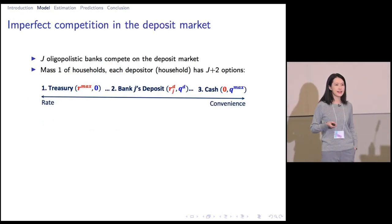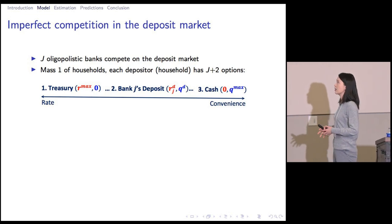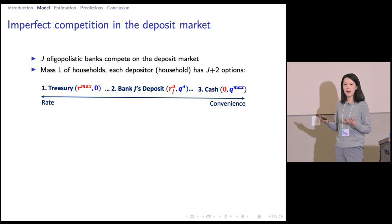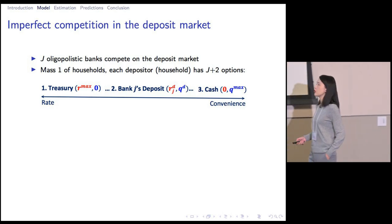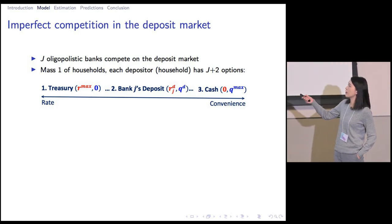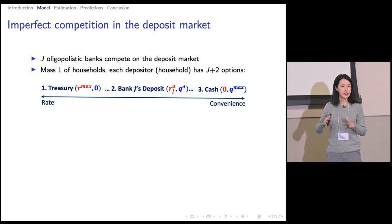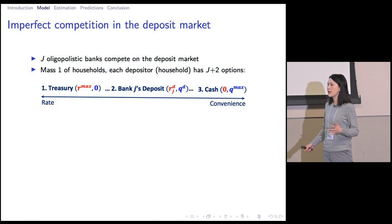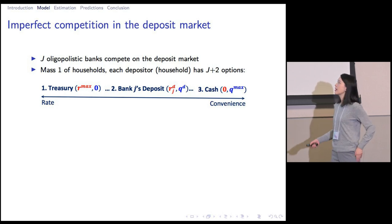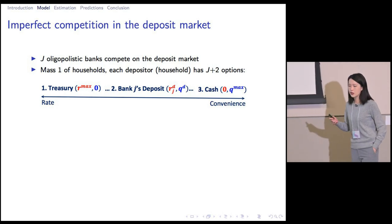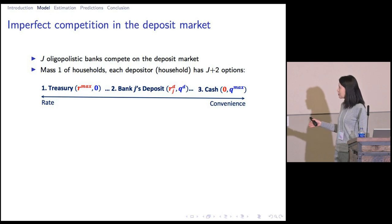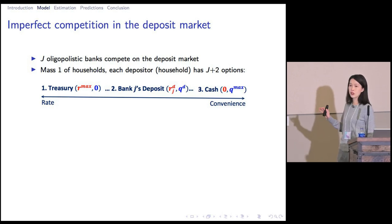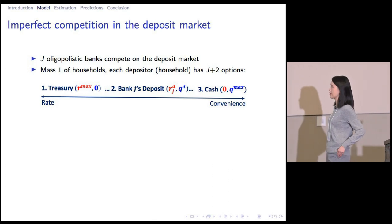First, we have the deposit market, where we have J oligopolistic banks competing for depositors. For each depositor — a household — there are J plus two options. He can choose to deposit with one of the J banks, which counts as J differentiated options because banks have market power and can price their deposit differently. The household can also choose to directly invest in treasury securities — that's option J plus one — or hold cash — that's option J plus two.